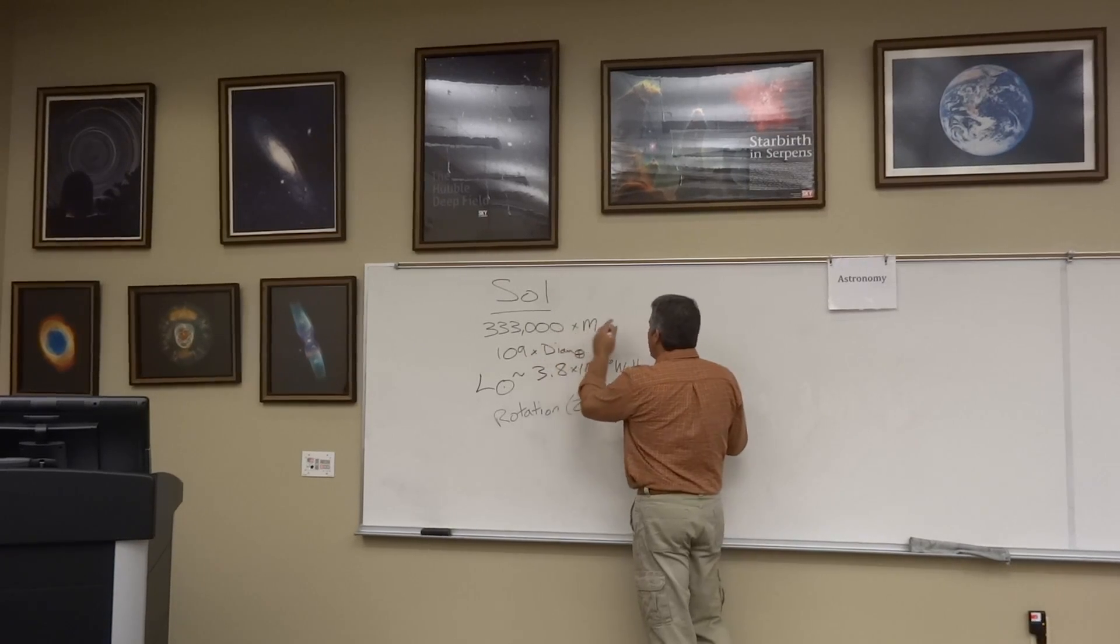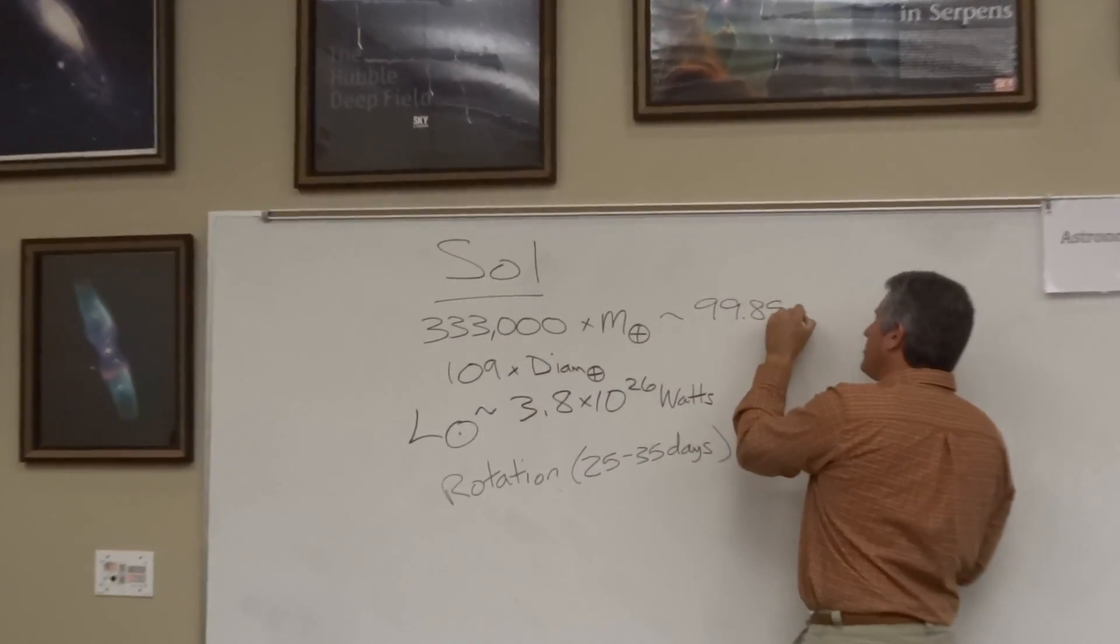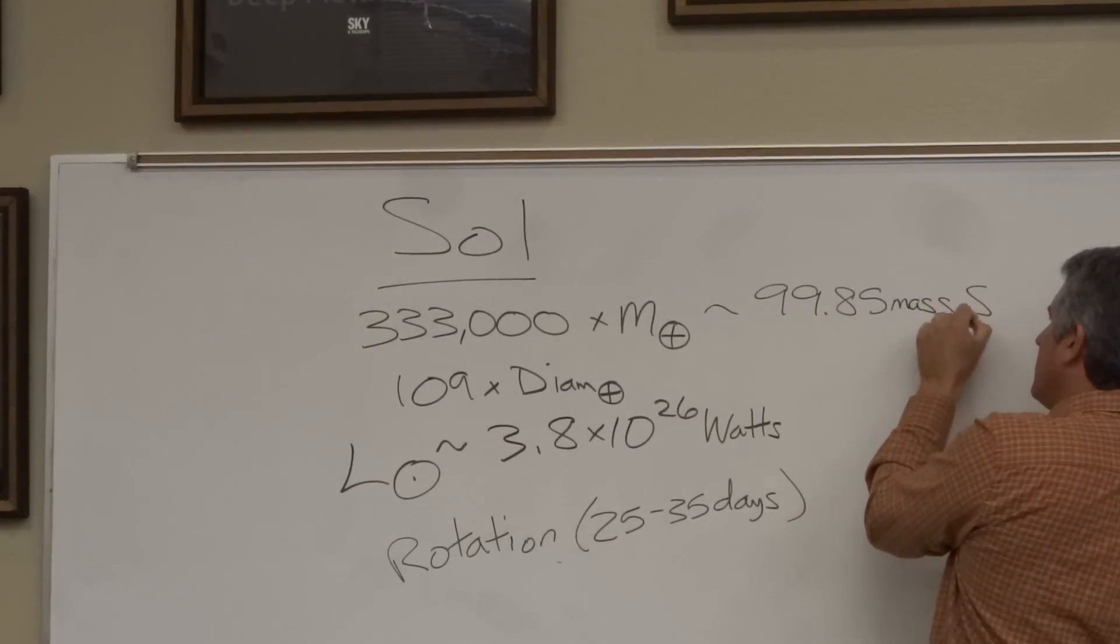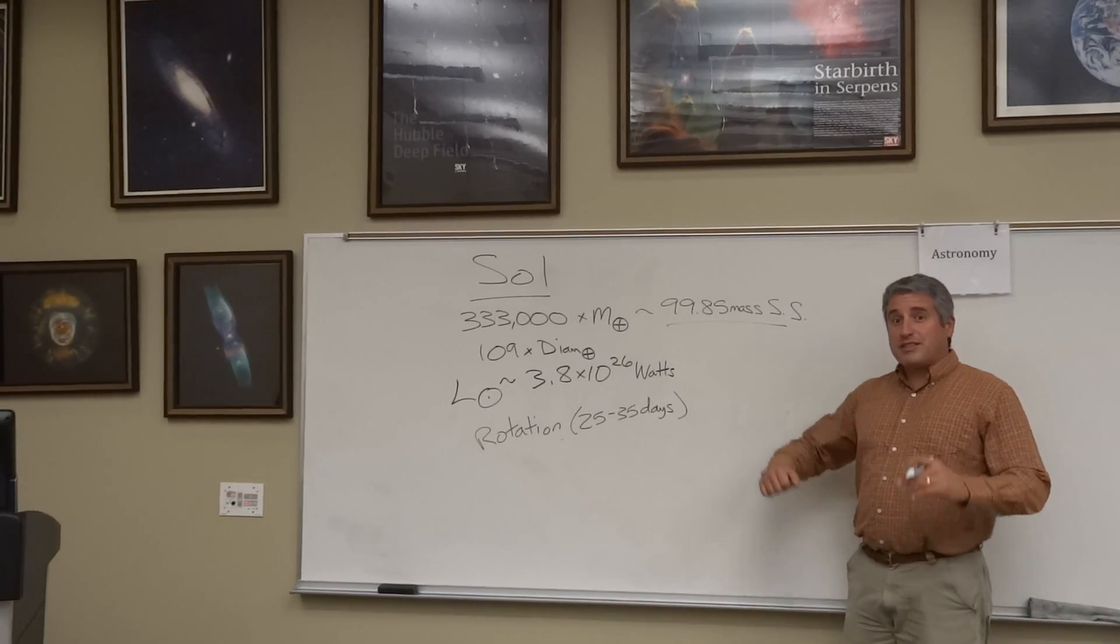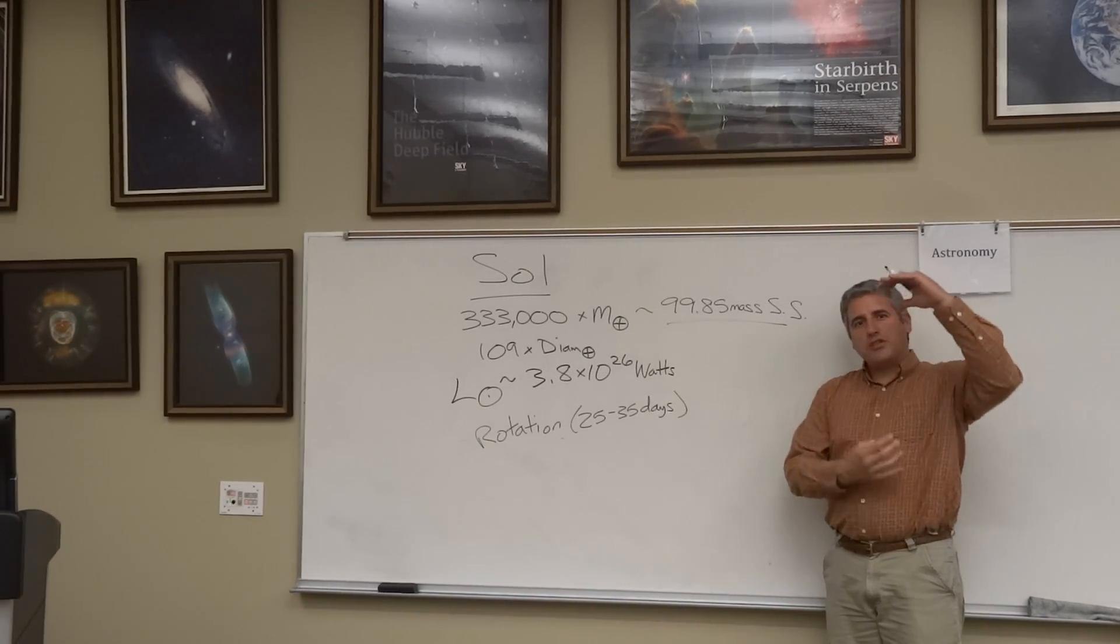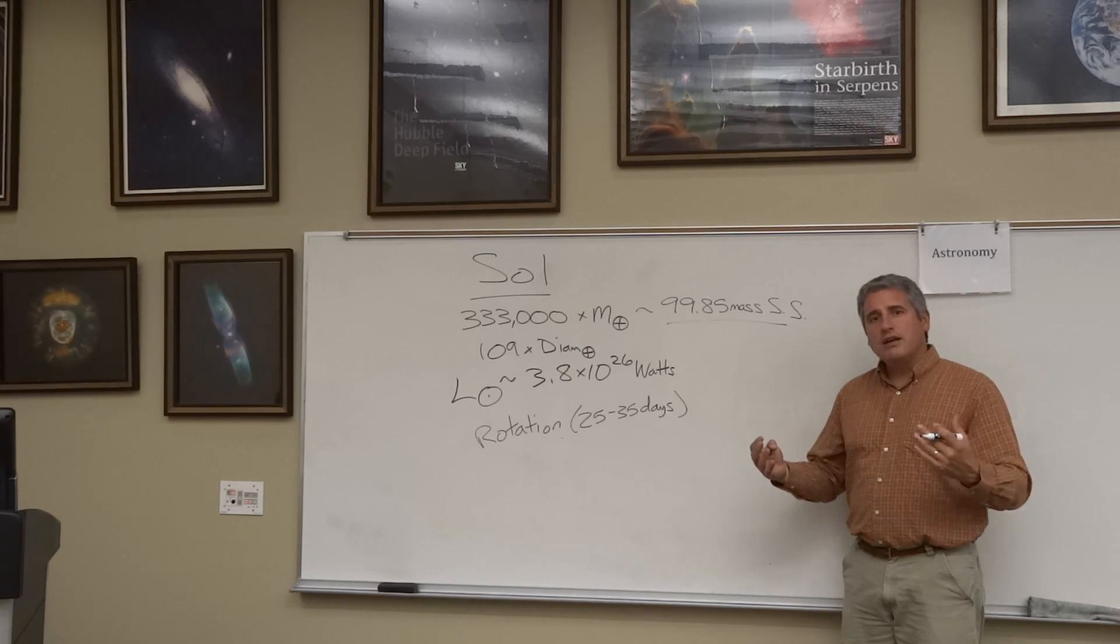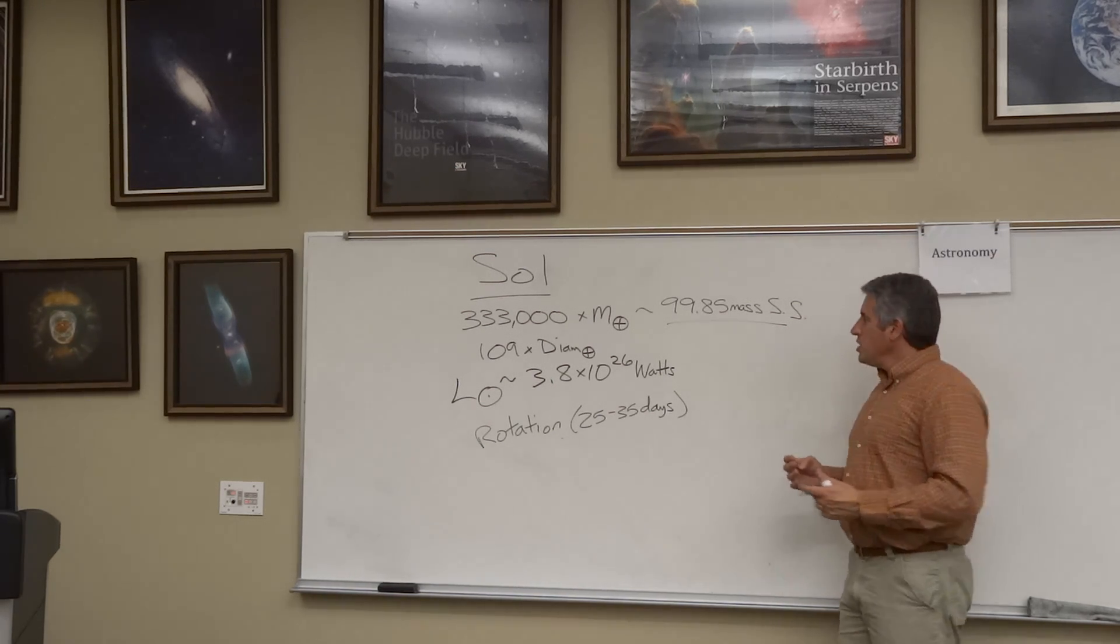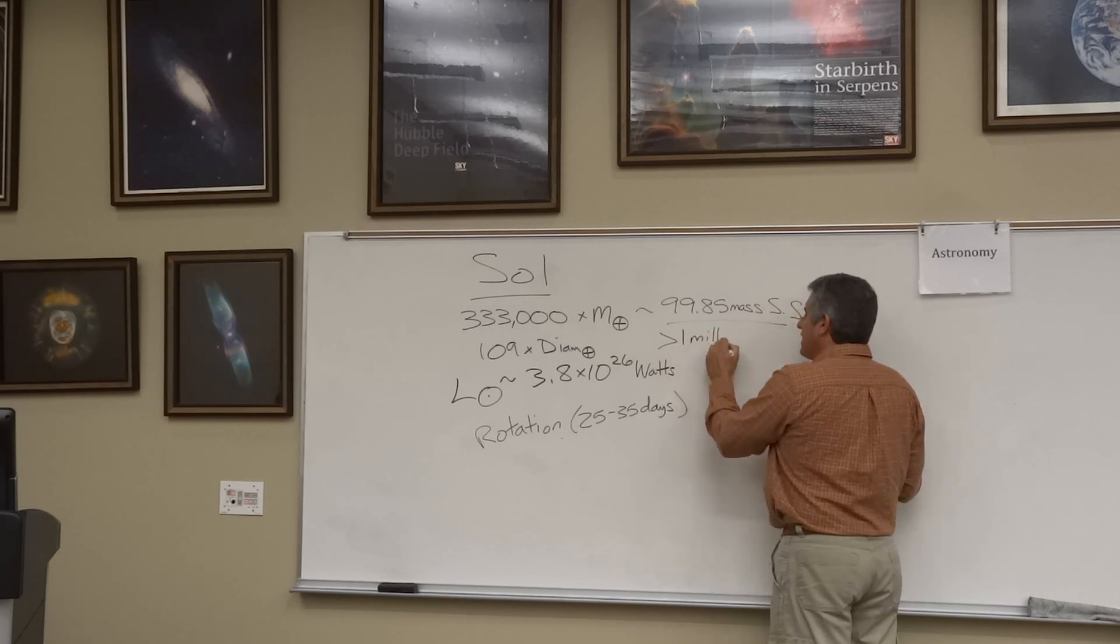It represents 99.85% of the mass of the solar system. It's 109 times the diameter of the Earth. That doesn't sound very big. But remember, we're talking three dimensions. So you could fit 109 times 109 times 109. You could fit more than 1 million Earths inside the Sun.